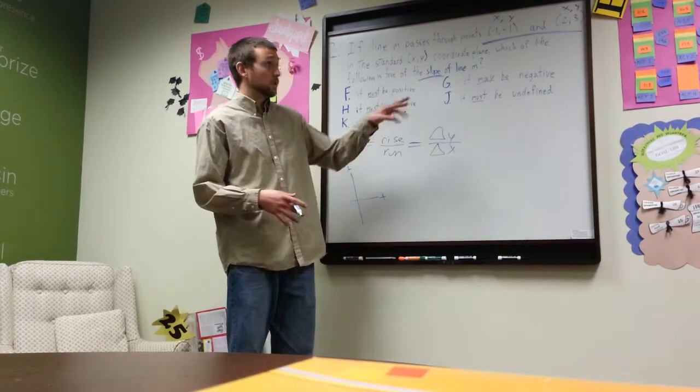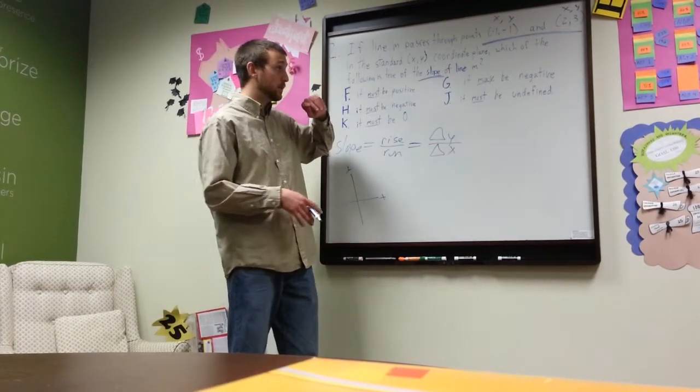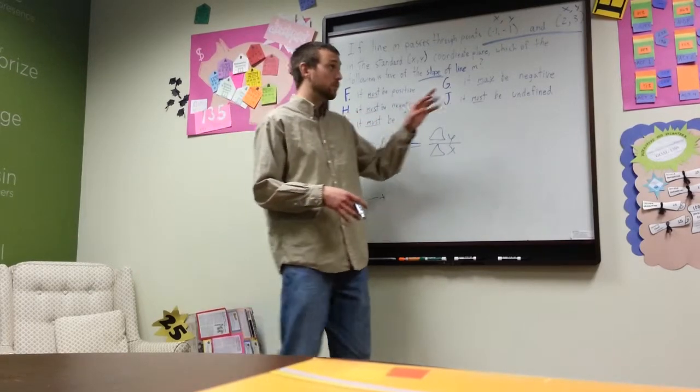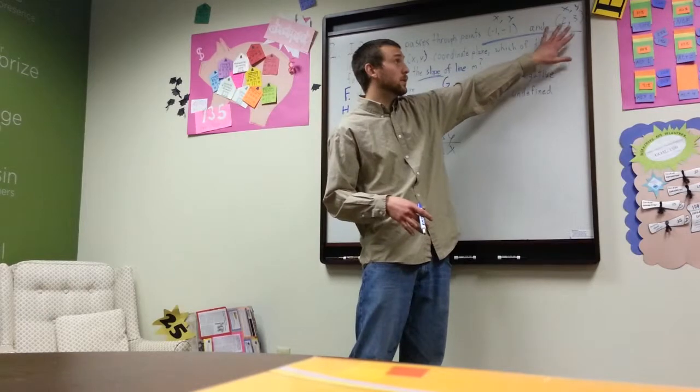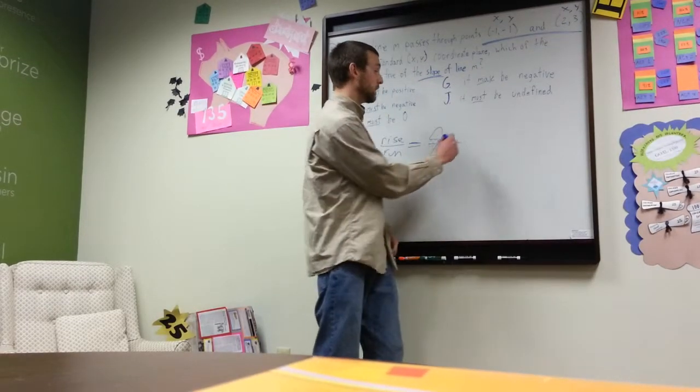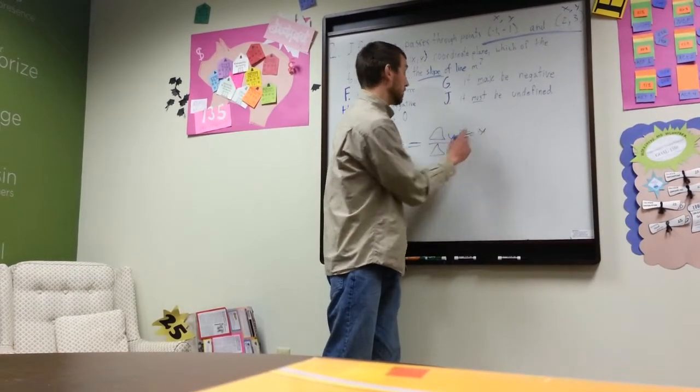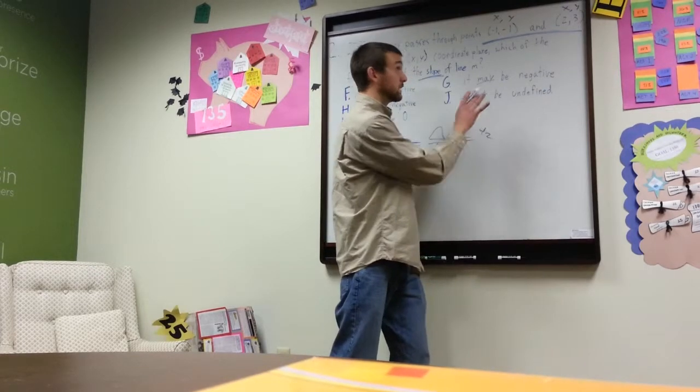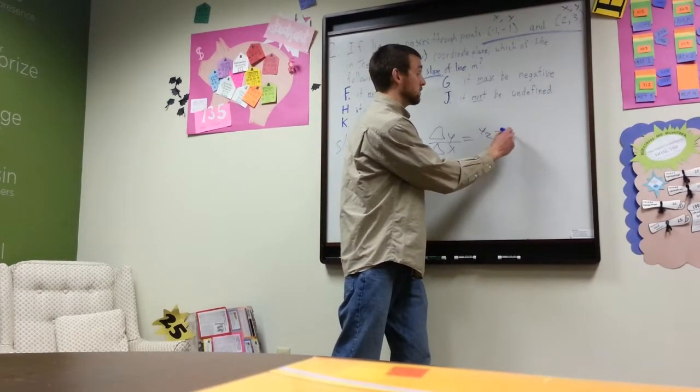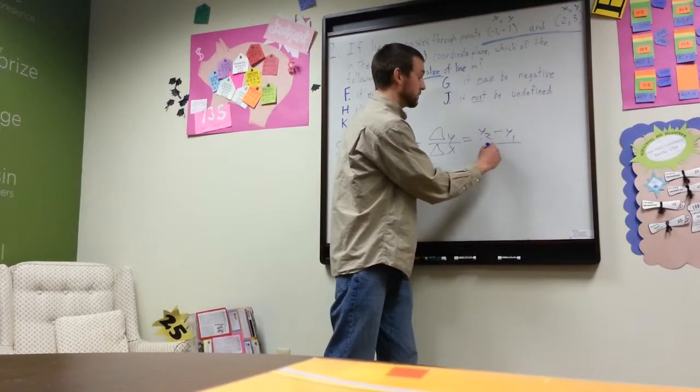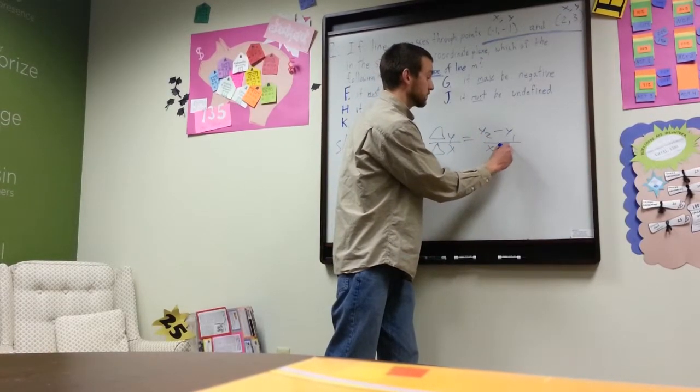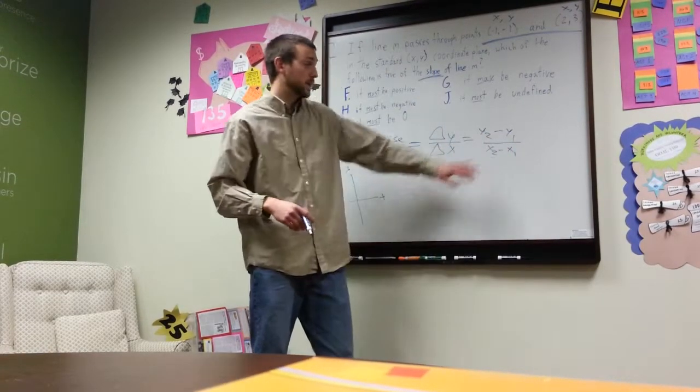So how are we going to find the difference? What we're going to do is we're going to take the y value of where we ended up, and I'm going to consider this first point where we started and this second point where we ended up. We're going to take the y value. Oh, generally. So, yeah, we're going to take the second y value and subtract the first y value in order to find the difference.